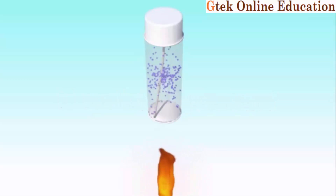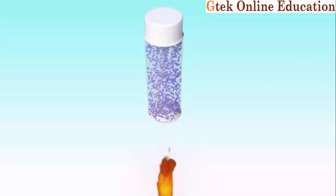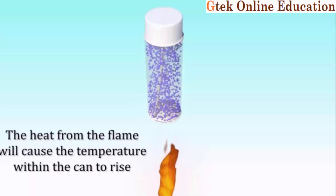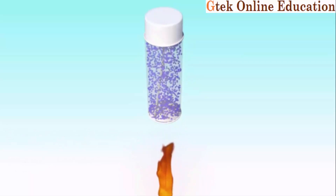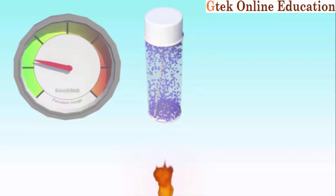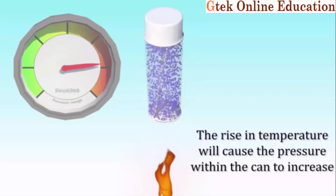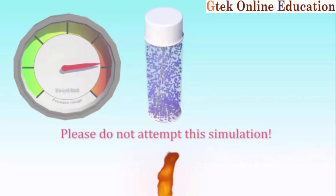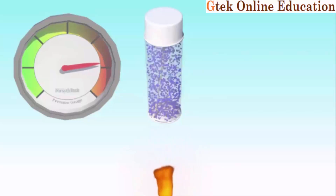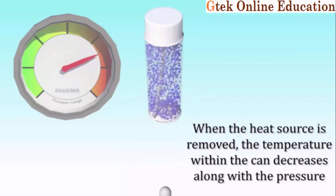Looking further into Gay-Lussac's Law, you can see the air molecules are really numerous inside a container. If the temperature increases, the heat from the flame will cause the temperature within the can to increase, which increases the molecules' pressure inside the can. So the rise in temperature will cause the pressure within the can to increase. Conversely, if the temperature is reduced, the pressure inside the can will automatically get reduced.